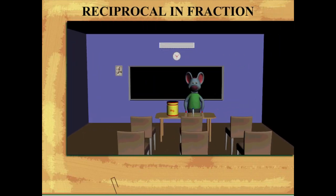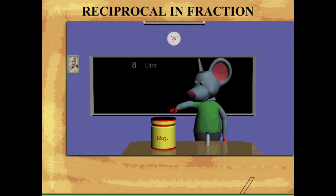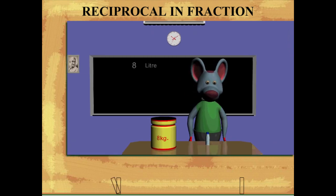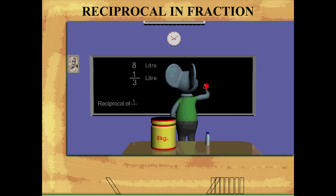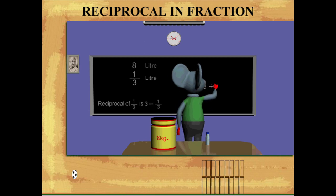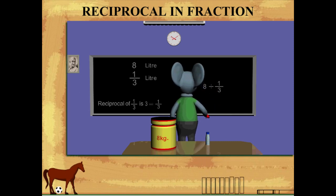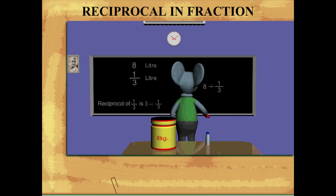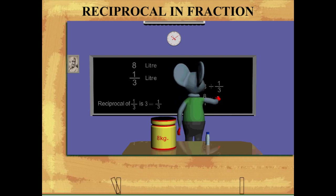Toby Mouse has an 8-liter oil jar on the table. He has to fill this oil into bottles of 1/3 liter. So he divides 8 by 1/3. He multiplies 8 by the reciprocal of 1/3, which is 3.